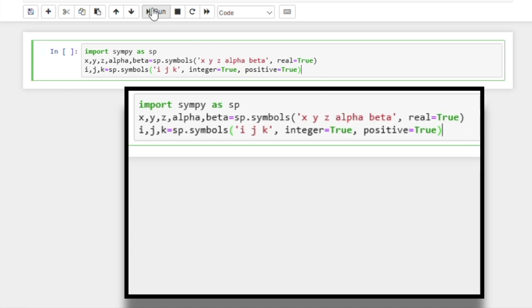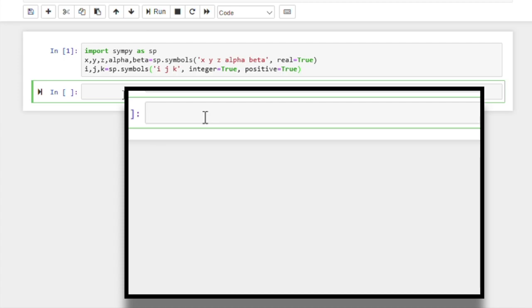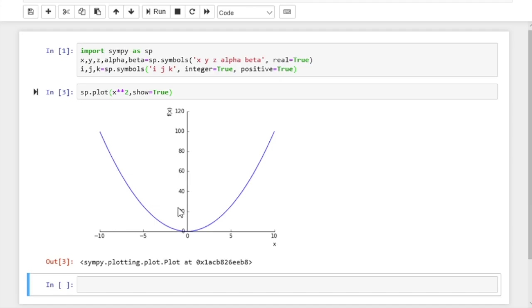And now if we click run, we are good to go. And now plotting the functions is as easy as typing plot. And let's apply it to the function x squared. And we will set show equal to true. So this should display the output here. Now if we run, we see it has plotted the function x squared with the default settings.